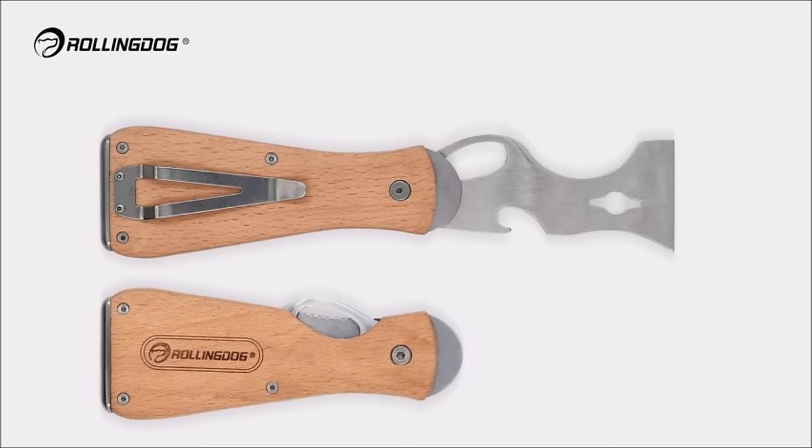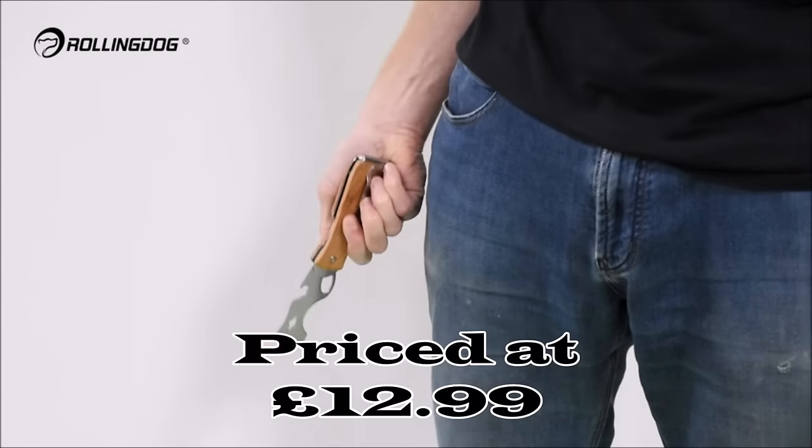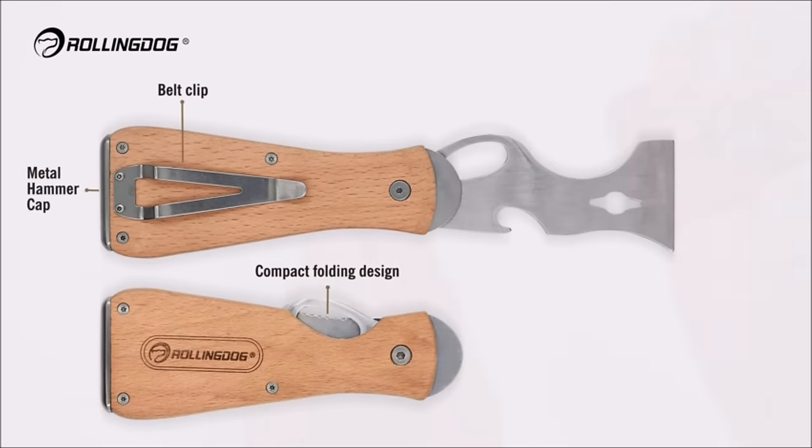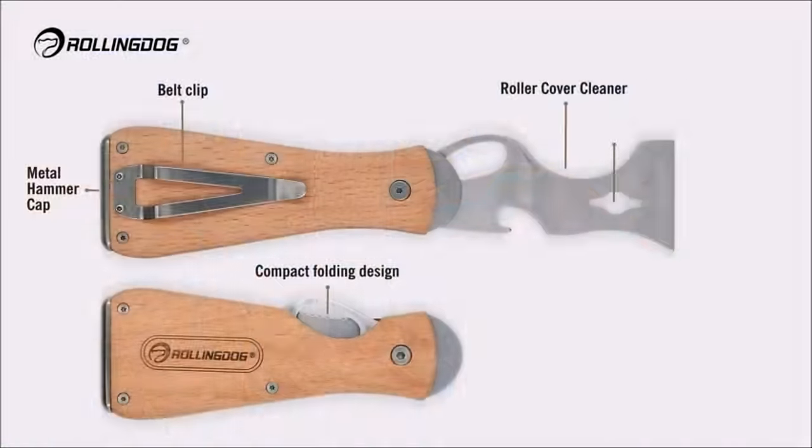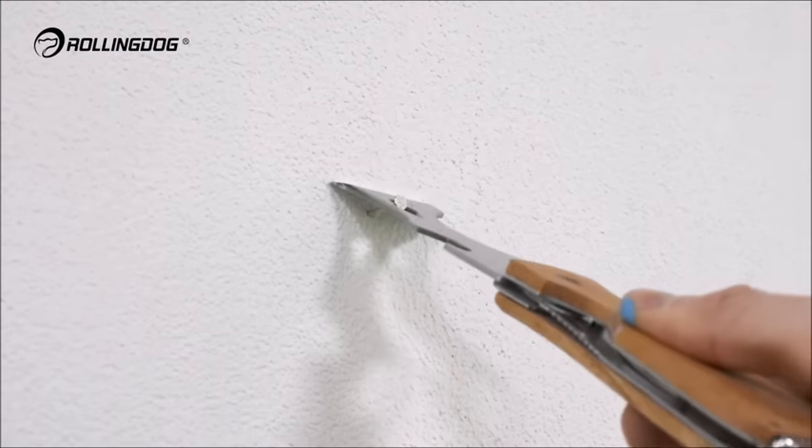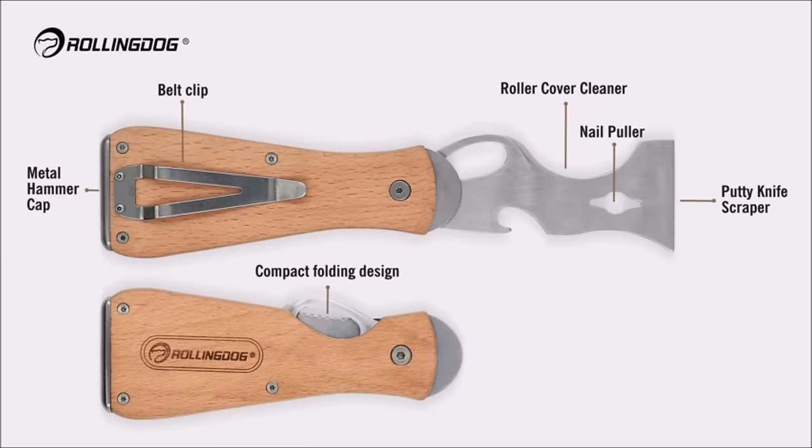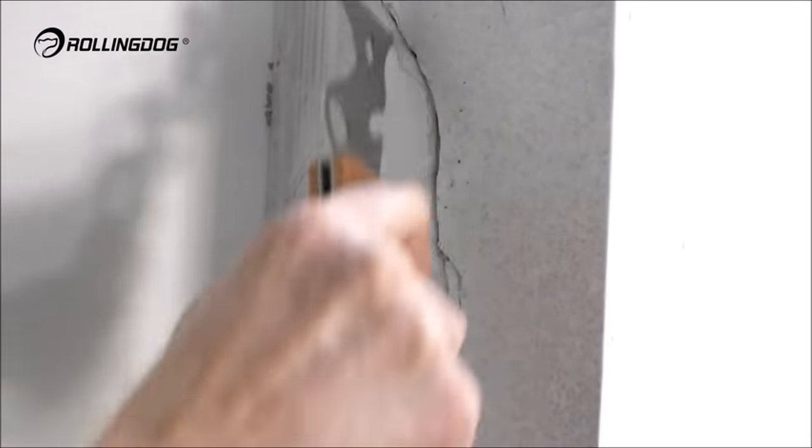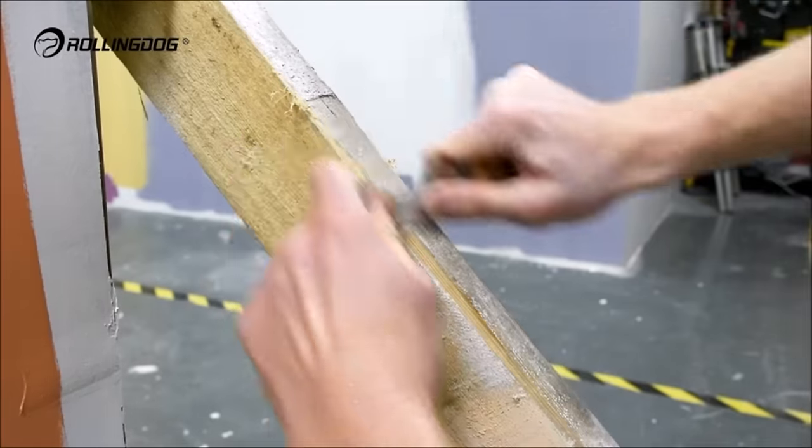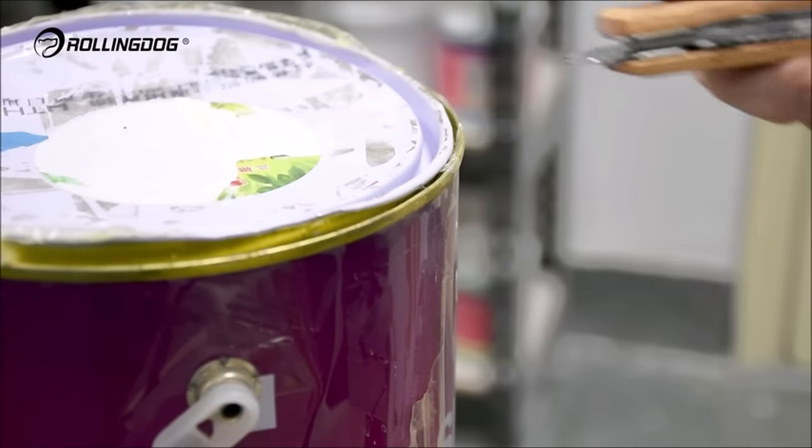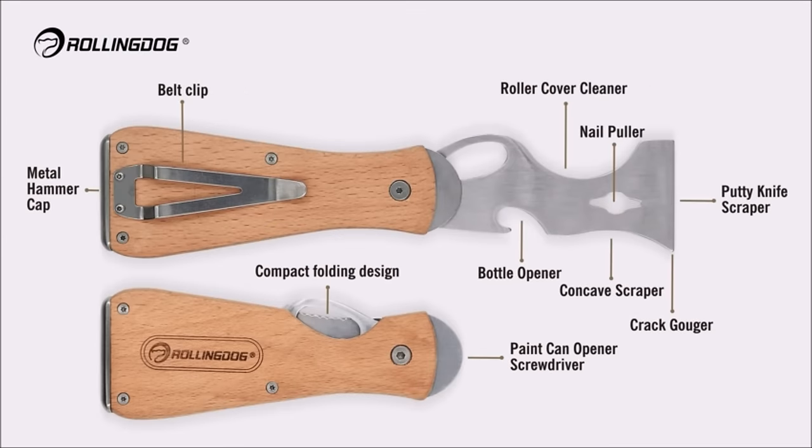Number eight, the Rolling Dog Painters Tool folding 9-in-1 stainless steel paint scraper putty filling knife, priced at £12.99, is a versatile multi-tool designed for various DIY projects. It serves multiple purposes including scraping and spreading, setting push points, cleaning and filling cracks and gouges, removing paint and wallpaper, pulling nails, opening bottles, and more. This paint scraper is constructed with 420 stainless steel and features a high-quality beech wood handle, ensuring durability and rust-proof qualities for long-lasting use. The folding design includes additional features such as a stainless steel hammer end and a belt clip on the back for easy carrying and accessibility.